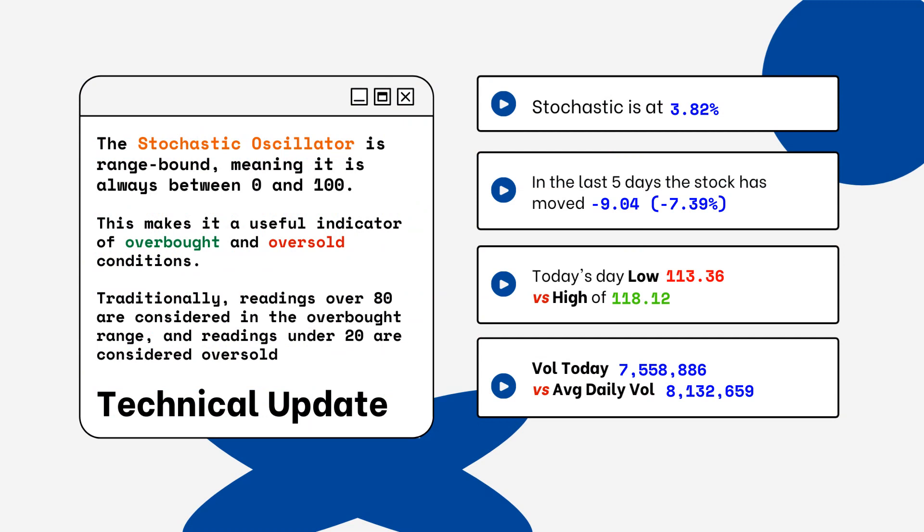Readings over 80% are considered overbought, and readings below 20% are considered oversold. You want to be aware of this when you're looking at a particular stock.